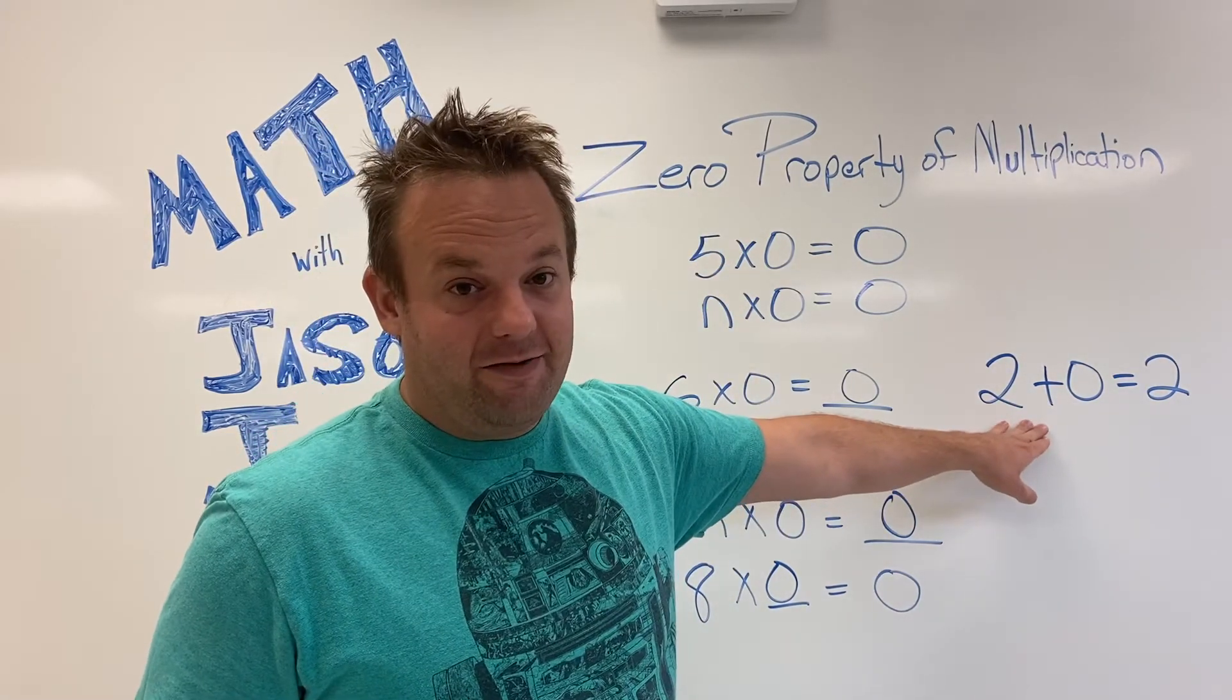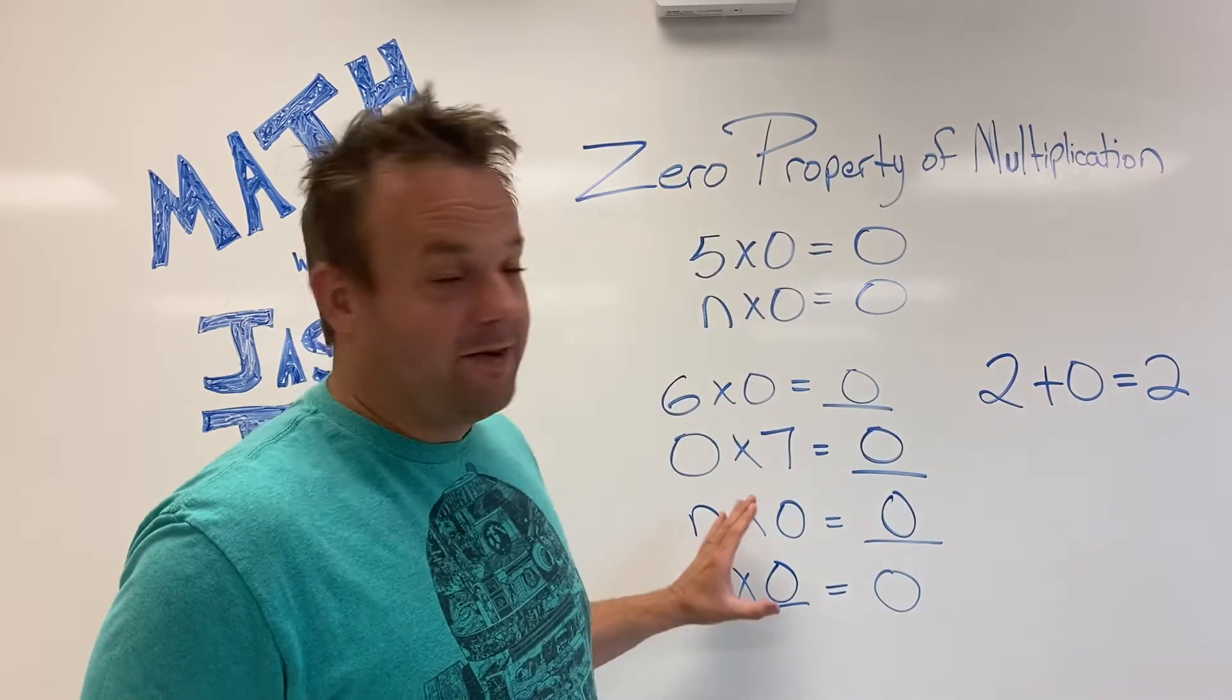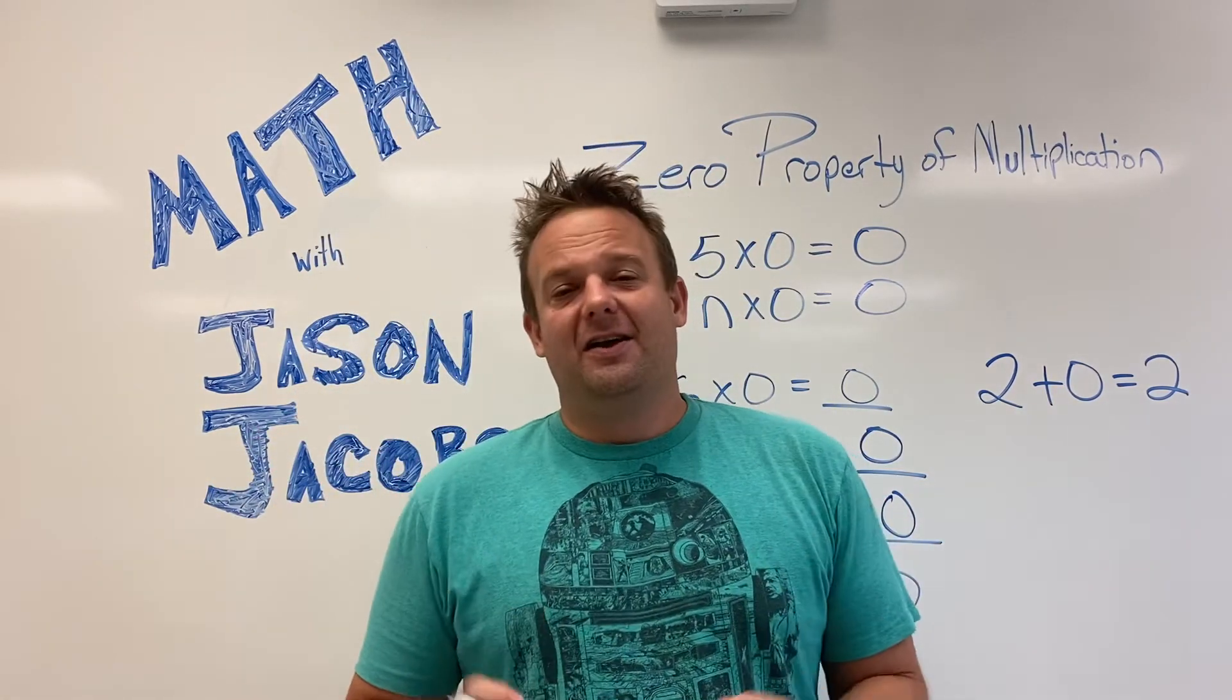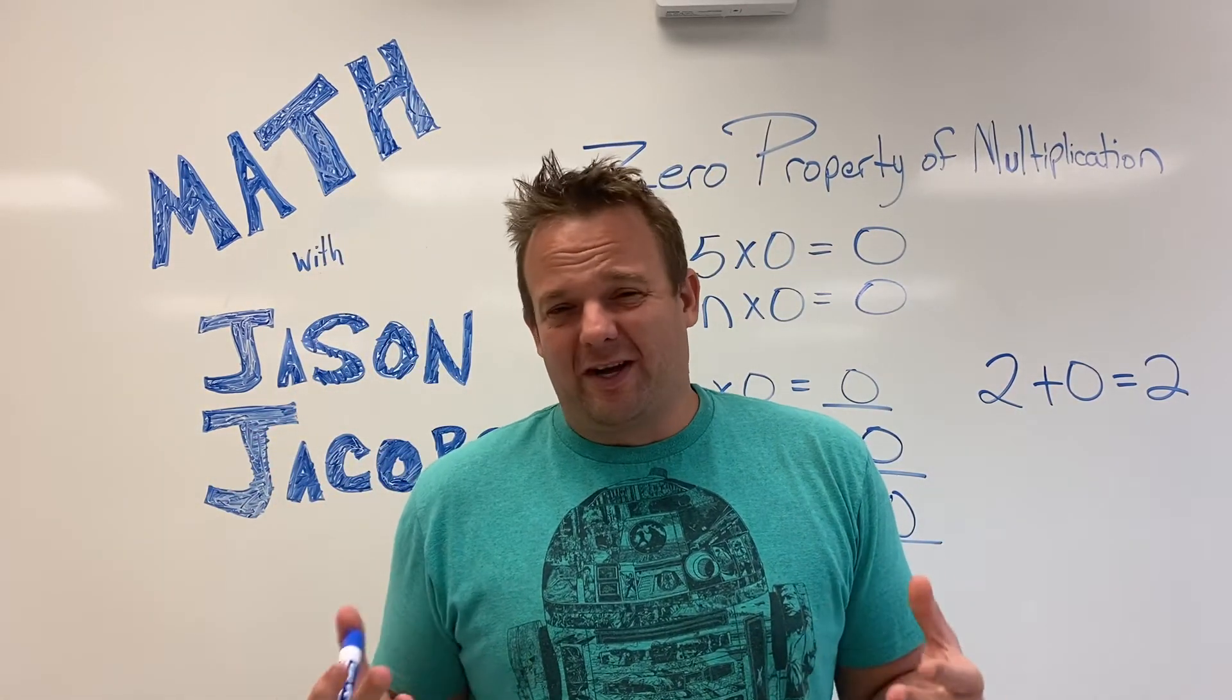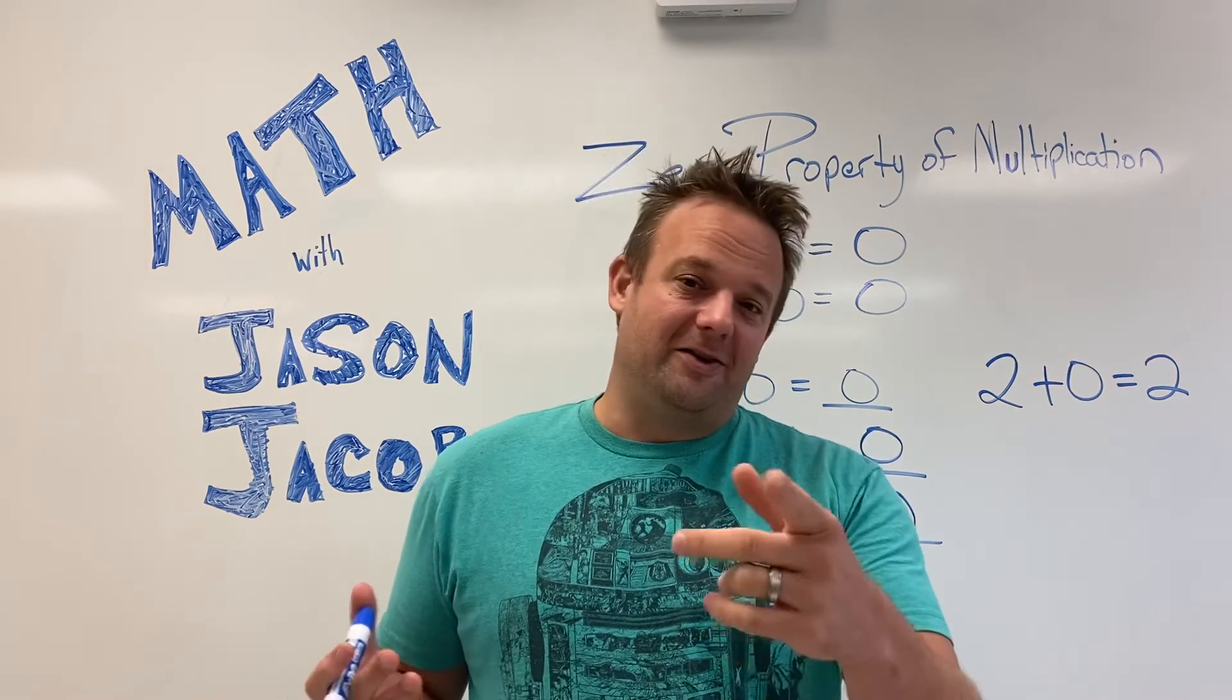Okay, so this one's the identity property of addition, and this one's the zero property of multiplication, and I bet some people get confused on that. But hey, not you now.